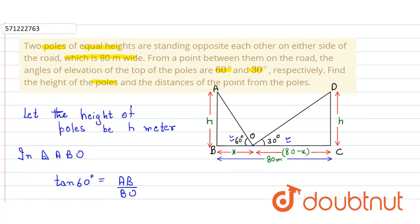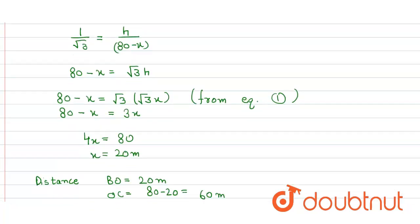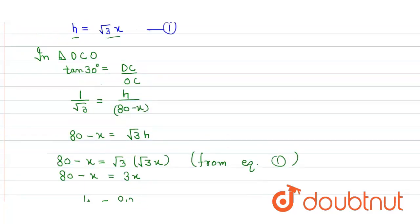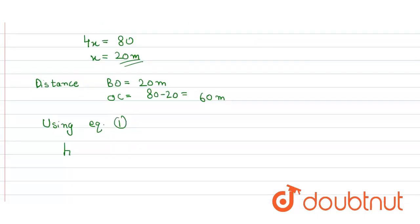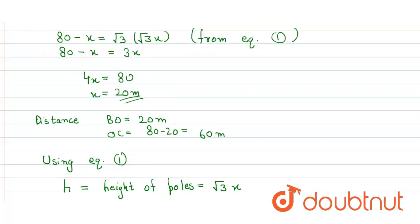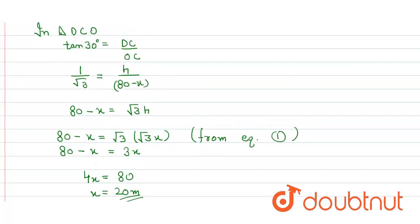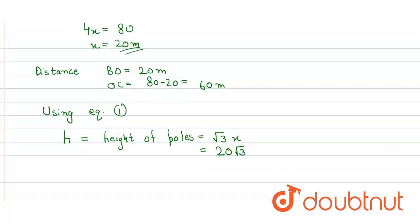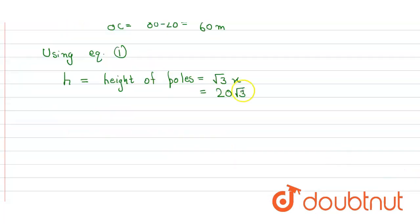Now we have to find the height of the poles. Using equation number one, we know that H equals √3 X. We have already calculated the value of X, so we simply substitute it: H equals √3 into 20, which equals 20√3 meters. That is our answer.